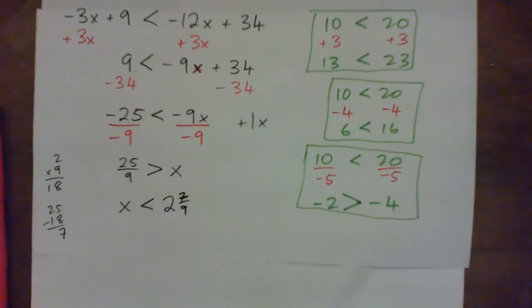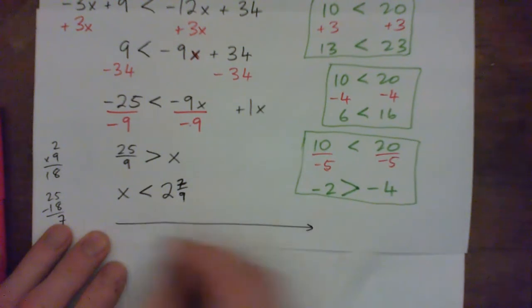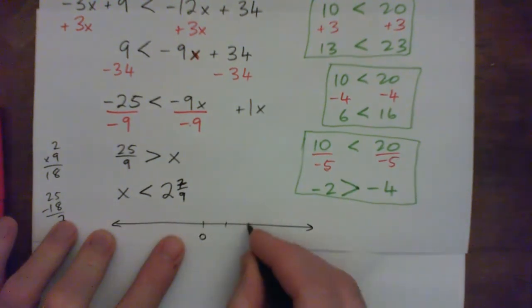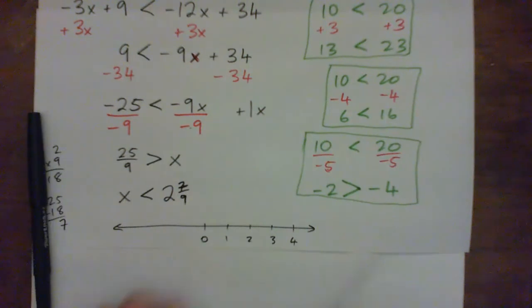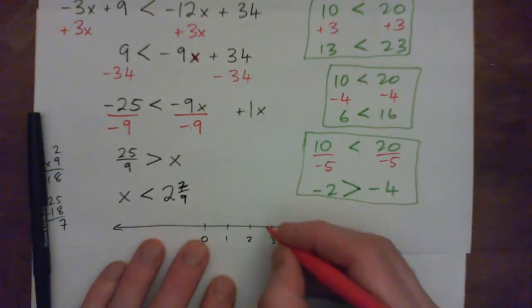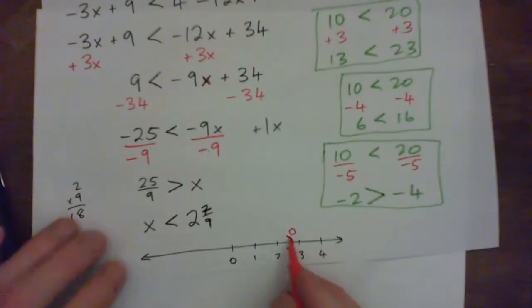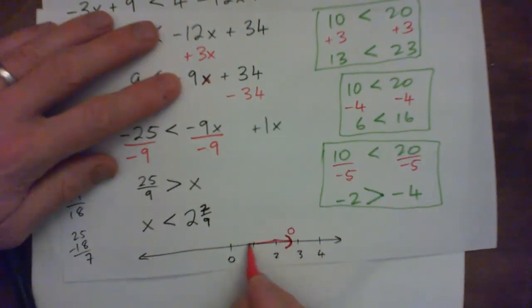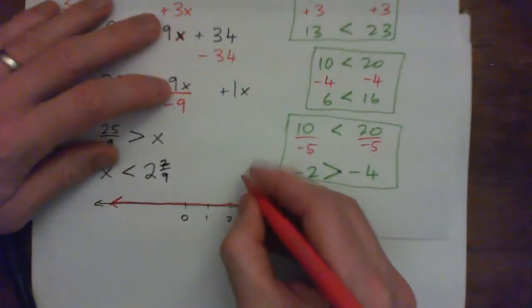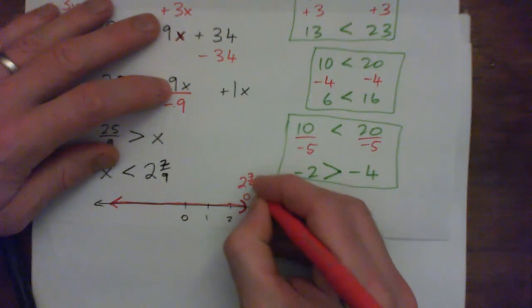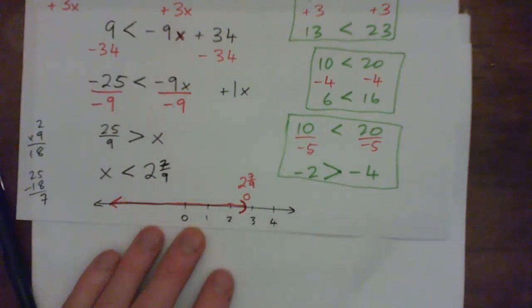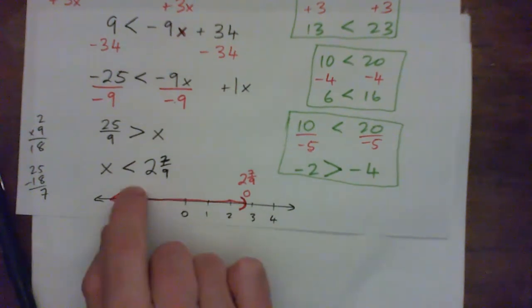And we need to plot that as a graph on a number line. So here's a number line. I'm just going to draw one real quick. Here's 0, 1, 2, 3, 4. 2 and 7 ninths is almost 3. It's about there. And it would have either an open circle or I'm going to do a parenthesis to show that it's not included as part of the answer. Because x is less than 2 and 7 ninths. So this is where our 2 and 7 ninths is located, or 25 ninths. So that's our line graph representation of this set of numbers.